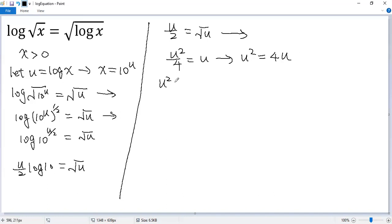So we get u squared minus 4u equals 0. So u equals 0 or u equals 4.